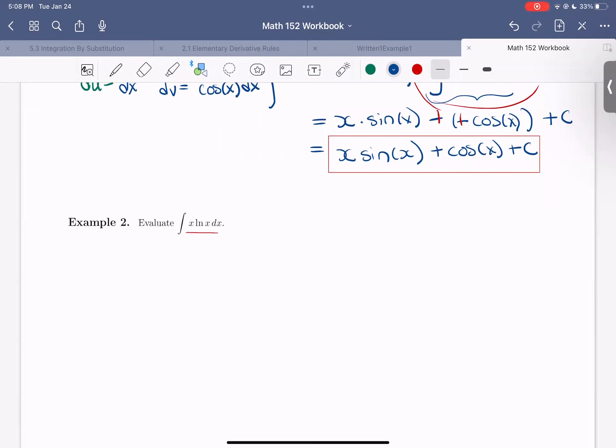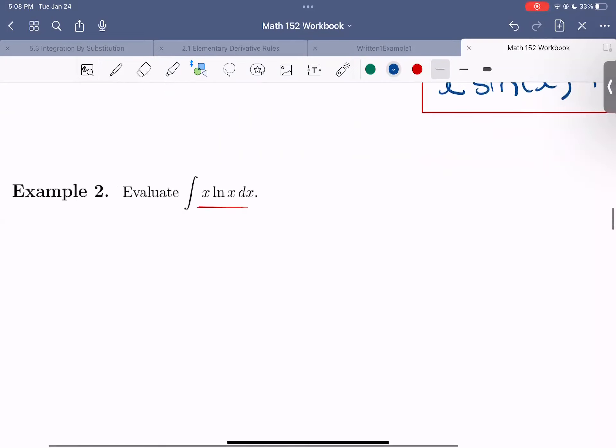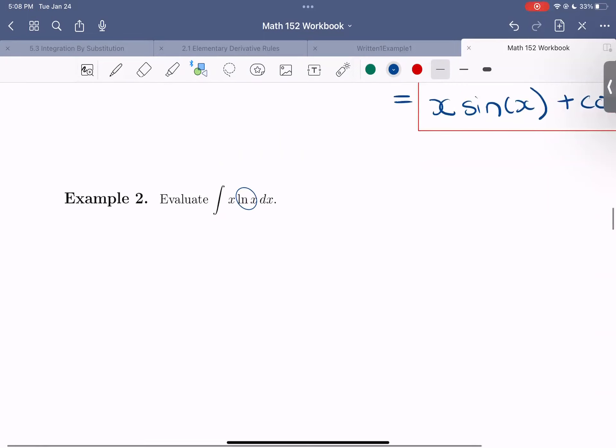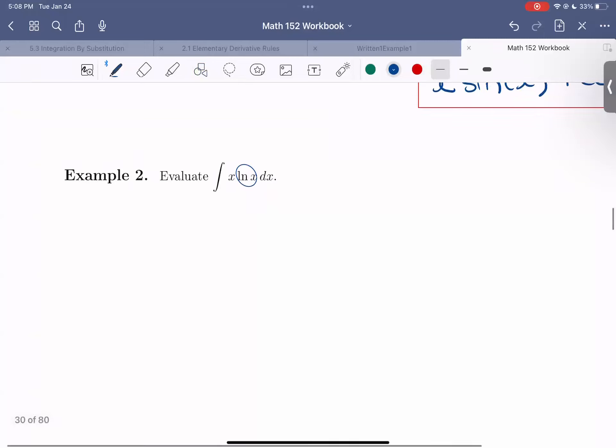So we want to choose our u so that when we take the du, it becomes simpler. So let's note if ln of x is our u, then the du is just going to become 1 over x. So that should simplify things. So let's go ahead and try that.